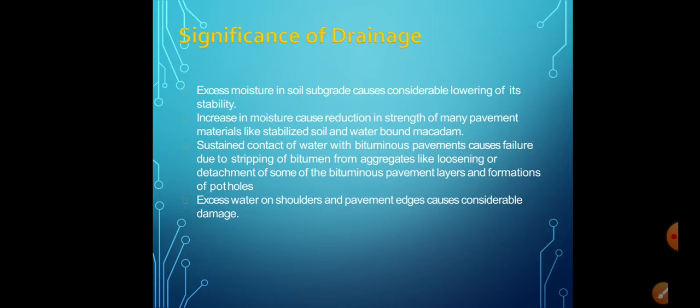Next is subsurface drainage systems. The diversion or removal of excess soil water from the subgrade is termed as subsurface drainage. The subsurface drainage system enables interception of seepage flow of water and diverts it away from the roadway to the nearest water resource. It also helps in lowering the groundwater level well below the subgrade and in controlling the capillary rise of water.